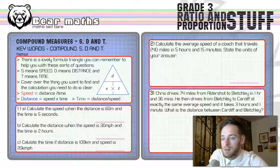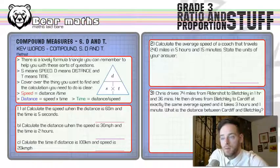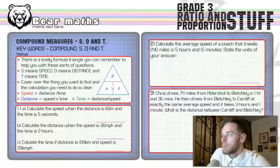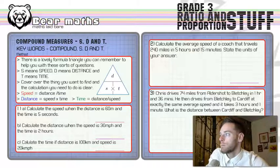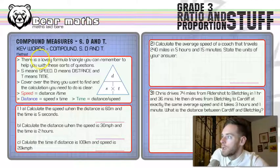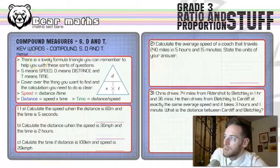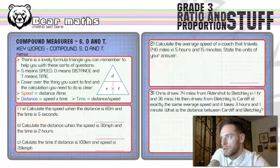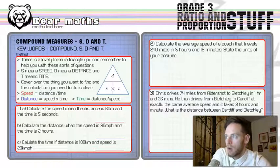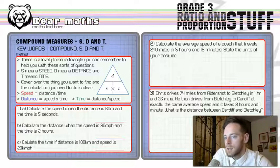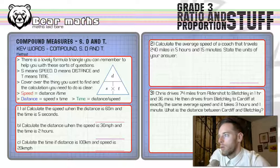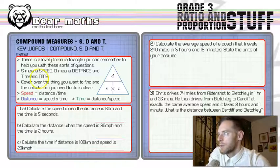Compound is when you join things together. You join the units together and get a compound unit or compound measure. S stands for speed, D stands for distance, and T stands for time. Speed is the compound measure here - if you combine the units of distance and time together, you get speed. That's the compound thing because you're putting those two units together.